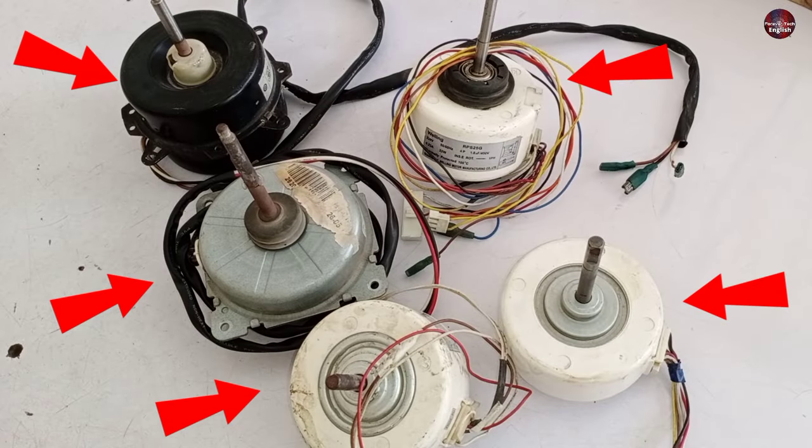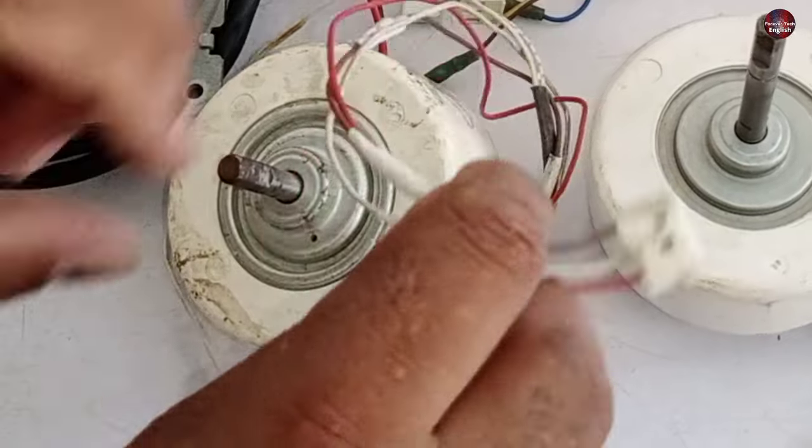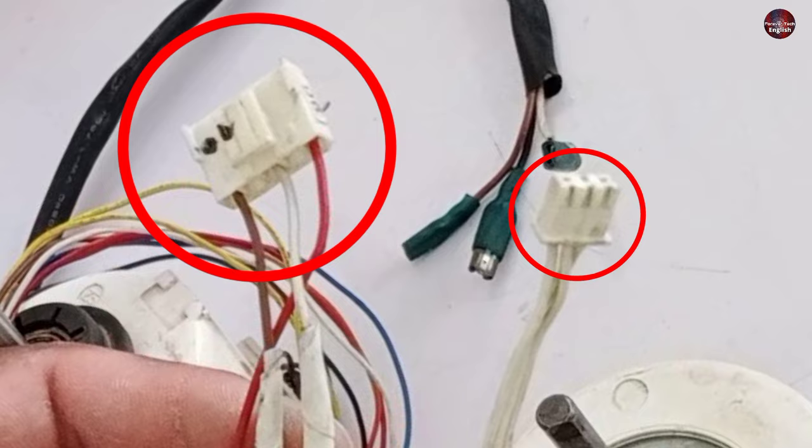These are five fan motors placed on the table. This motor is used in mini-split air conditioner indoor units. This motor has six wiring connections, one big and a small connector.